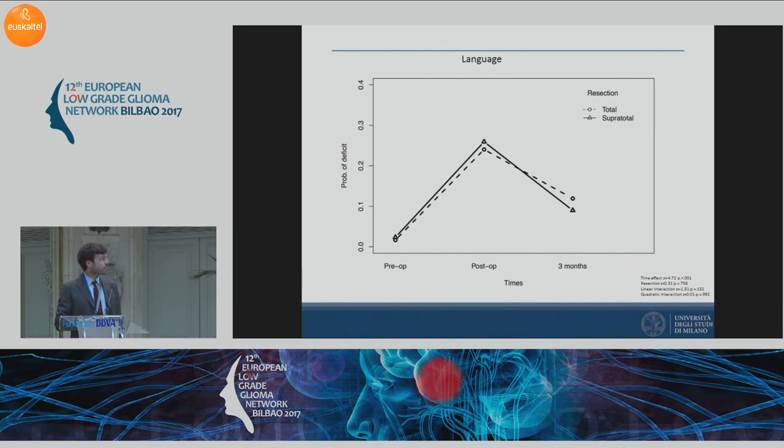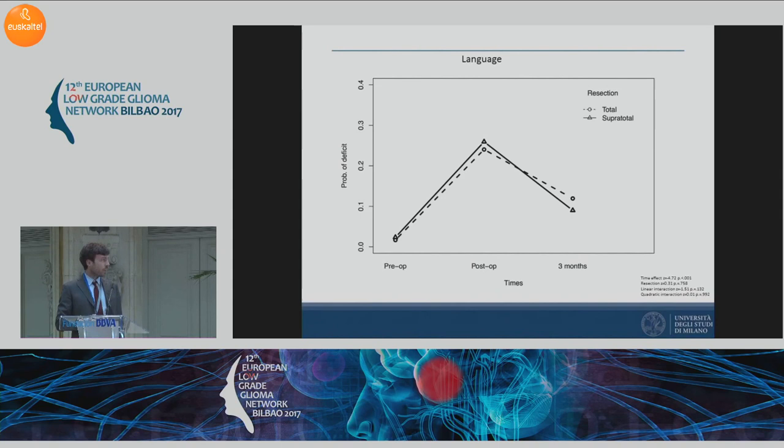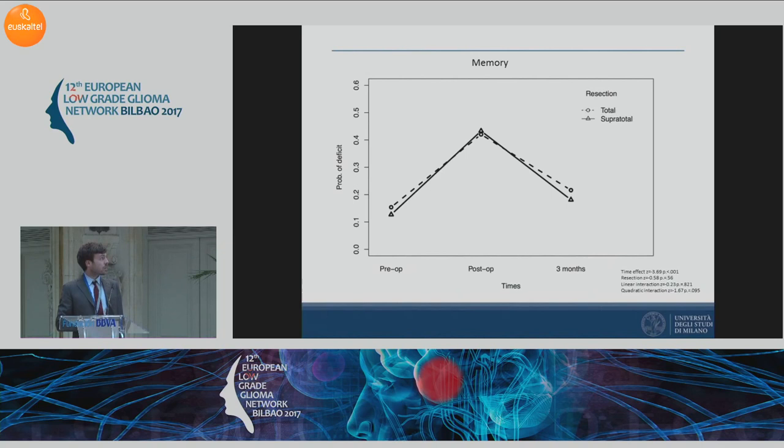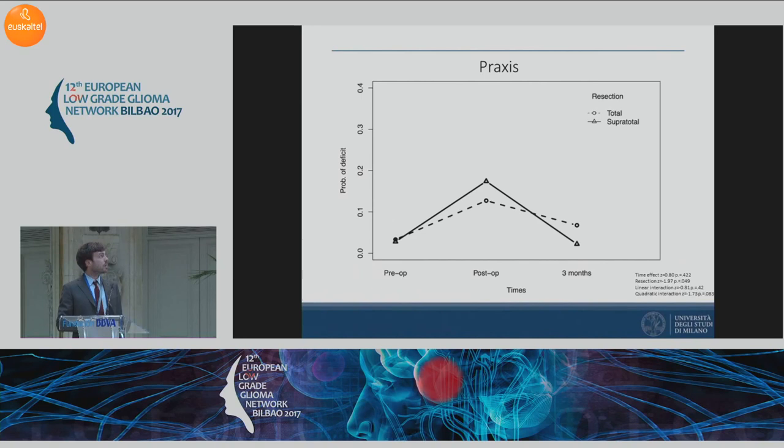The dotted line represents the total group and the solid line the supratotal group. The two groups show a very similar trend over time, with an increased percentage of deficit immediately after surgery and substantial recovery at three months. We did not find any statistical effect of resection type on neuropsychological scores, and this result was consistent across every functional domain: memory, praxis, executive functions, and fluid intelligence.